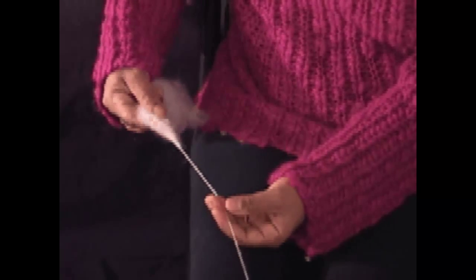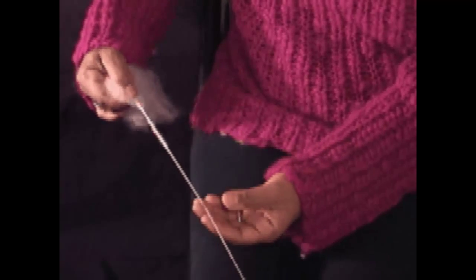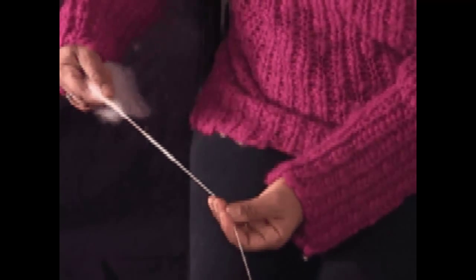When the yarn is the desired thickness and has the correct amount of twist, move the back hand forward and let the yarn wind onto the bobbin.